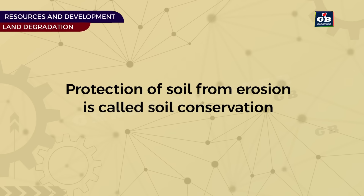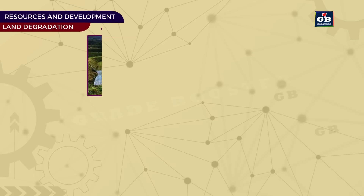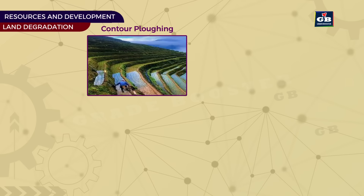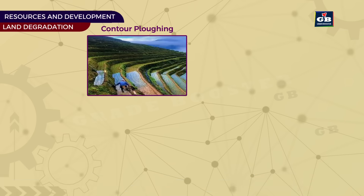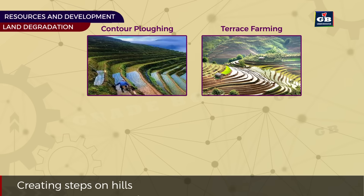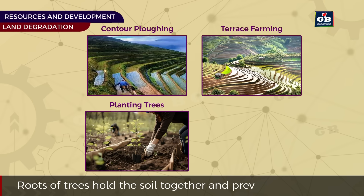Soil conservation means protection of soil from erosion. The different methods to protect soil include: contour ploughing — ploughing along natural slopes; terrace farming — creating steps on hills for farming; and planting trees, as the roots of trees hold the soil together and prevent soil erosion.